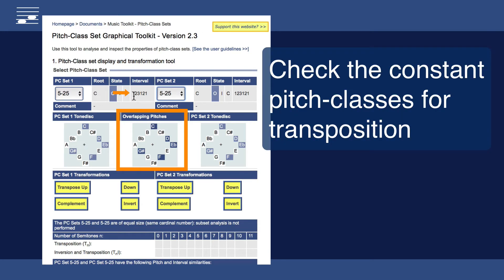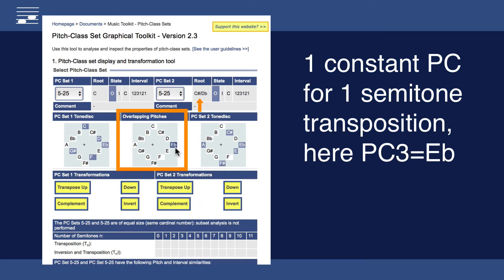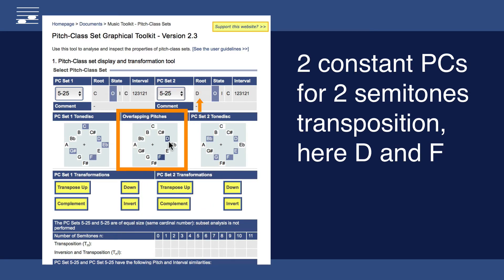Next I will demonstrate another property of the interval vector. The elements also indicate the number of constant pitches under transposition. A semitone upward should yield one overlapping pitch and indeed that is the pitch class E-flat. Upward transposition by a major second should yield two overlapping pitch classes, confirmed by inspecting the D and F.